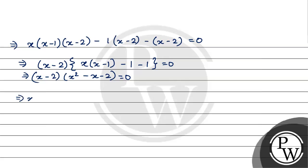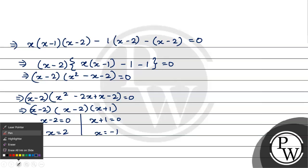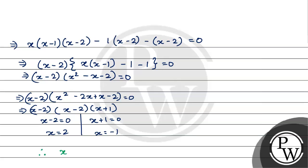So, x minus 2 multiplied by x squared minus 2x plus x minus 2 is equal to 0. This factors as x minus 2 multiplied by x plus 1 equals 0. Therefore x minus 2 equals 0 or x plus 1 equals 0, giving x equals 2 or x equals minus 1. The final answer is x is equal to 2 or minus 1.